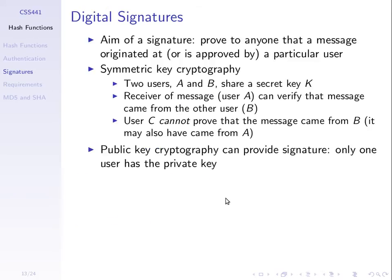We want to be able to prove to anyone that a message originated or is approved by a particular user. We can't use symmetric key cryptography. The problem with symmetric key cryptography is that there's one key and two people in the world have that key. If user A and B share a secret and A has the key, anything encrypted using that key could have come from A or B. So with symmetric key cryptography, we don't have confirmation that a message encrypted with that key comes from one particular user — it could have come from two particular users.